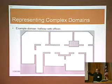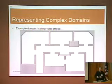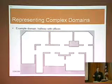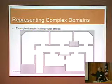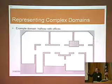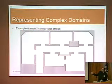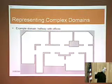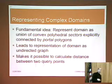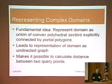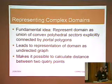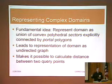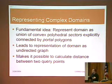Let me go to another more complex domain. For Great Dark Island, we assumed a very simple, essentially flat domain without any walls or barriers between the sensors. But if we deploy sensors in buildings, we have more complex domains. Here you see a floor plan of a building with a hallway and several offices and doors into these offices. The fundamental idea is that we try to represent these complex domains as a union of convex polyhedral sectors or cells that are explicitly connected by portal polygons. This is some important meta information that we have to take into account when we reconstruct the underlying fields.